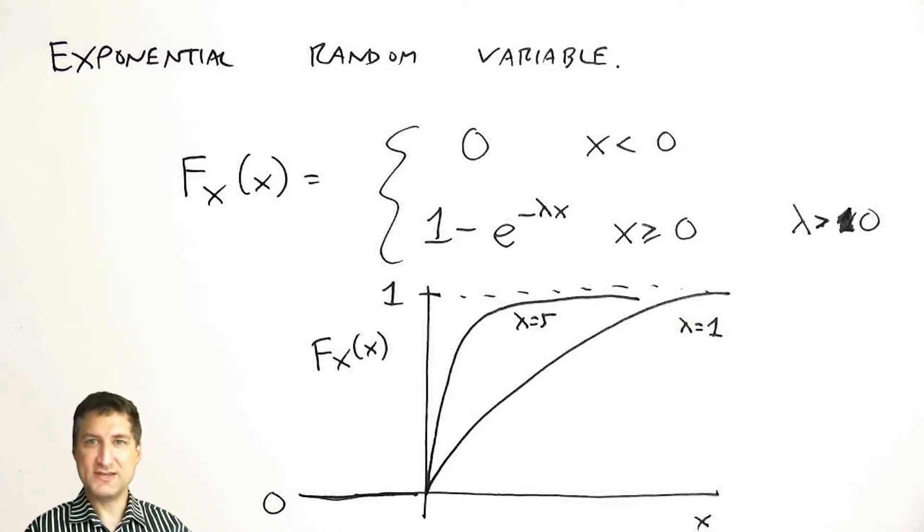The idea is that for larger values of lambda, getting big values out here for values of x are less likely. Now I want to figure out what is the PDF for this exponential random variable.